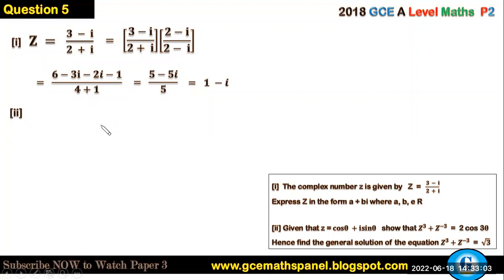From De Moivre's theorem, we know that z = cos θ + i sin θ. From that theorem, zⁿ = cos(nθ) + i sin(nθ), and equally z⁻ⁿ = cos(nθ) - i sin(nθ).